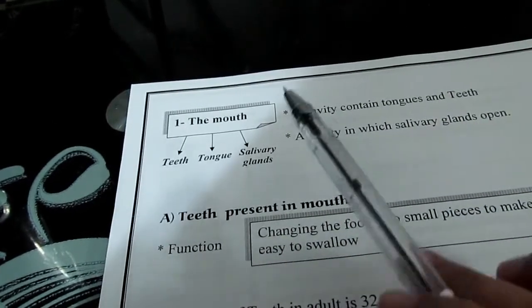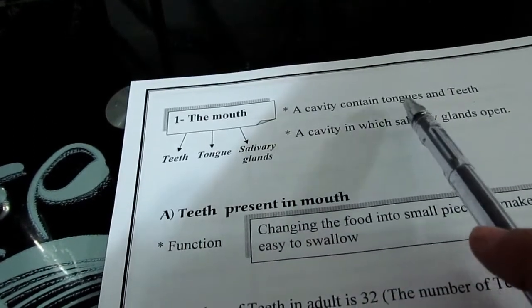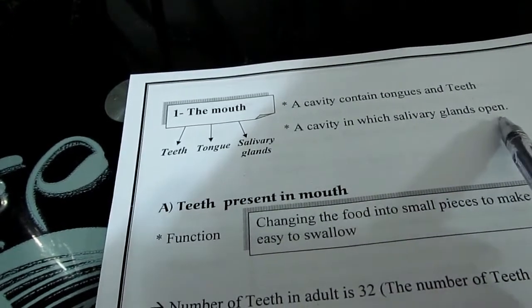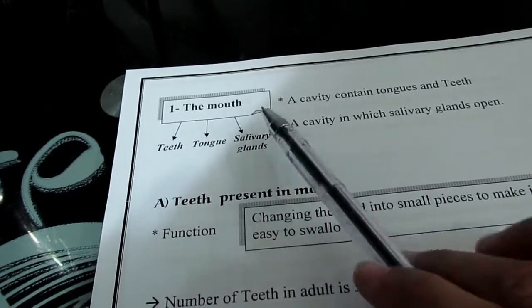So, the mouth contains what? Tongue and teeth and salivary glands. Salivary glands open in what? They open in the mouth.